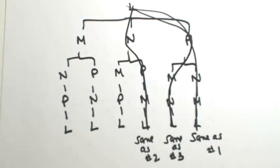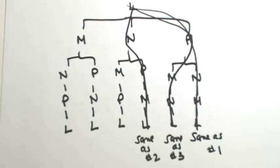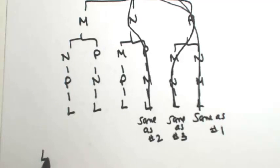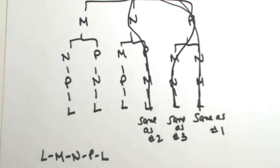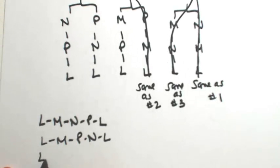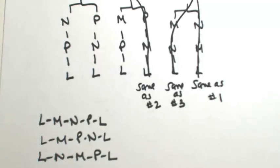So there's actually only three circuits that are unique to this graph. Let's list them out and then count up the edges and see which one has the lowest cost. We have L to M to N to P to L, L to M to P to N to L, and L to N to M to P to L. So those are the only three unique circuits.